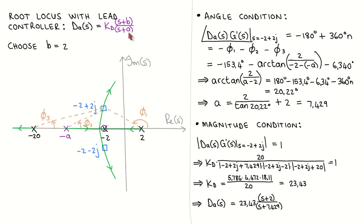The structure of the lead controller is shown here with the pole at minus a located to the left of the zero at minus b, and the controller gain given by k_d. We arbitrarily choose the controller zero to cancel the plant pole at minus 2. There is no specific reason why we should do this, but it simplifies our calculation somewhat. We now have to choose the location of the controller pole such that the root locus passes through the desired closed loop pole locations, and then choose the controller gain to place the dominant closed loop poles in the desired locations.